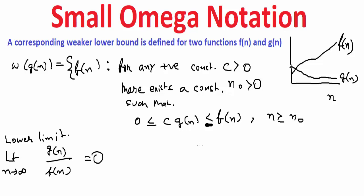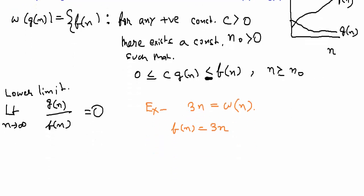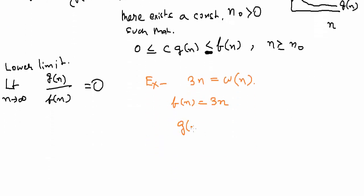I will explain with the help of an example. Suppose we have a function, we need to prove that 3n is small omega of n. For that we need to assume f of n is 3n, and we will take g of n something very small, 1.